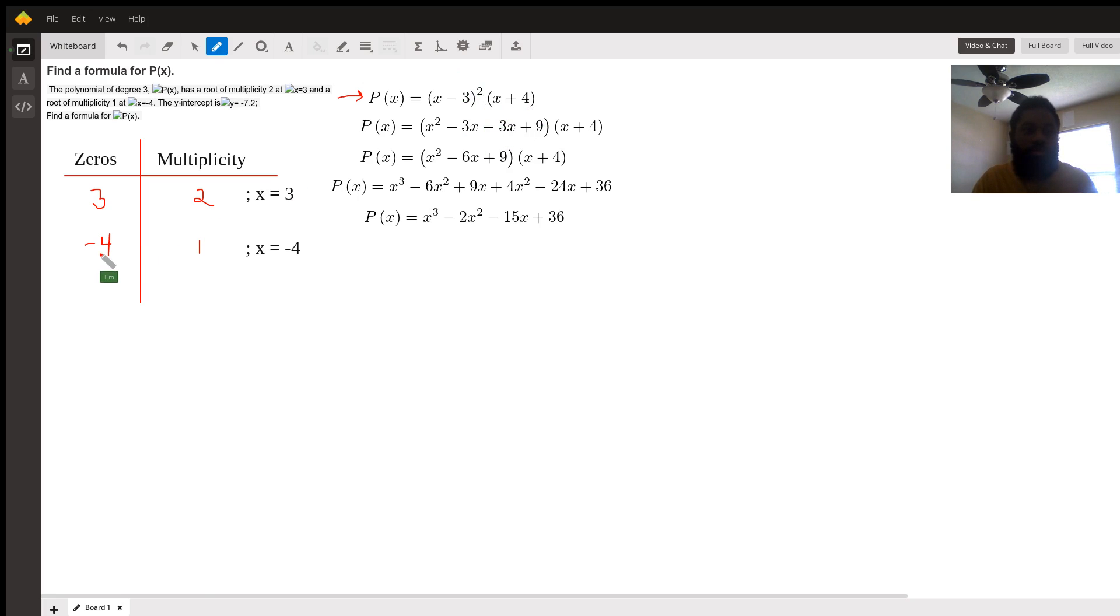Which is the zero in the factor form with a multiplicity of 1, degree 1. But when the degree is 1, you don't have to write it. You can if you want to.